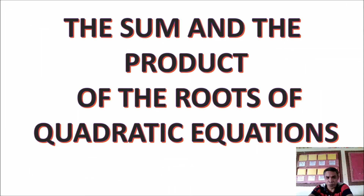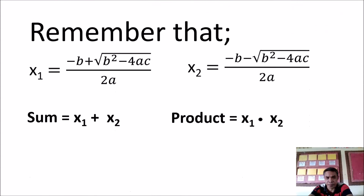The sum and the product of the roots of quadratic equations. Remember that x₁ equals negative b plus the square root of b squared minus 4ac, all over 2a. And x₂ equals negative b minus the square root of b squared minus 4ac, all over 2a. To find the sum, we need to add x₁ and x₂: sum equals x₁ plus x₂. And to find the product: product equals x₁ times x₂.